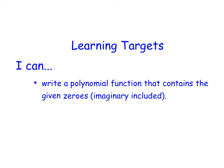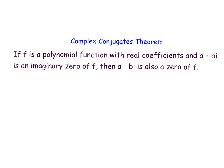In this video, we will be writing a polynomial function that includes the given zeros, focusing on what happens when we're given imaginary zeros to include. Before we begin, we need to discuss something called the complex conjugates theorem, which is very similar to the irrational conjugates theorem.